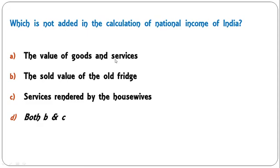The first question: which is not added in the calculation of national income of India? Options include value of goods and services sold, value of the old fridge, services rendered by housewives, and both B and C. We know that the value of an old fridge sold and services given by housewives are not included in the calculation of national income. So both B and C is the correct answer.